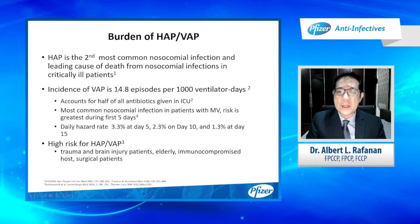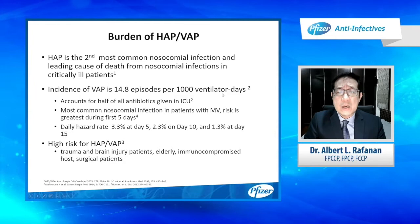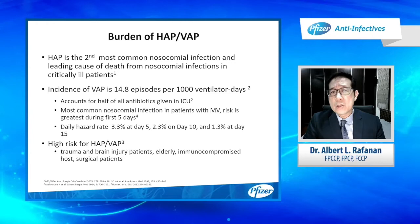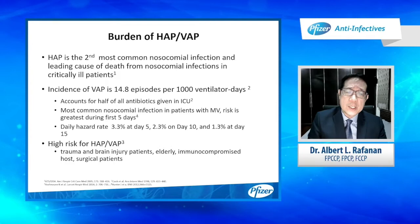Ventilator-associated pneumonia is also very common, with 14.8 episodes per 1,000 ventilator days. It accounts for half of all the antibiotics used in the ICU, and it is the most common nosocomial infection in patients on a mechanical ventilator. The daily hazard ratio as well...